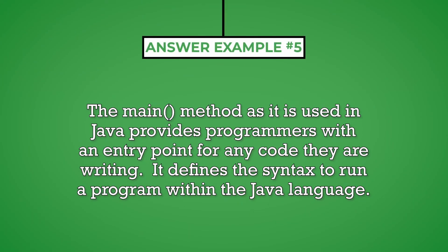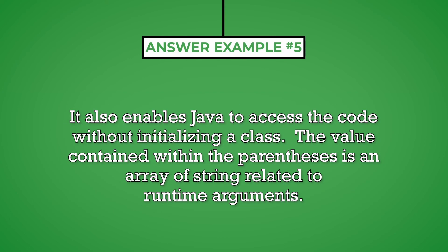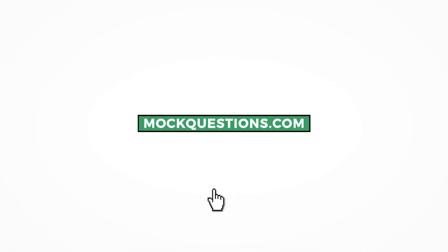The main method, as it is used in Java, provides programmers with an entry point for any code they are writing. It defines the syntax to run a program within the Java language. It also enables Java to access the code without initializing a class. The value contained within the parentheses is an array of string related to runtime arguments. Thank you for watching. If you want more Java developer interview questions and answers, visit us at mockquestions.com.